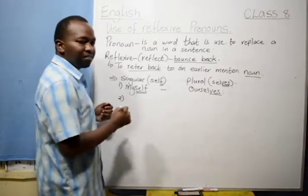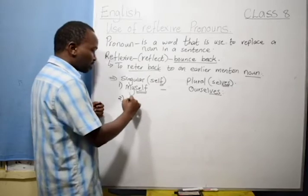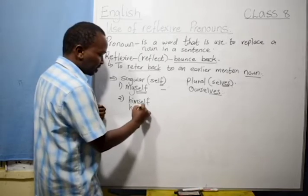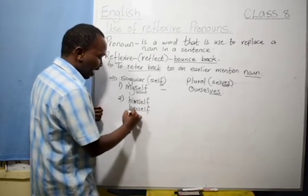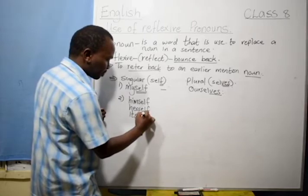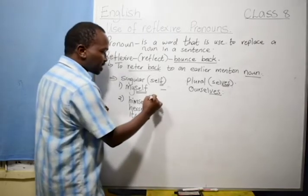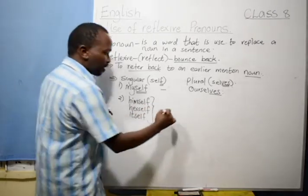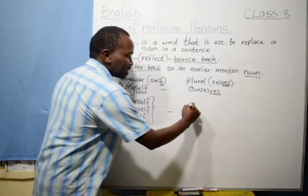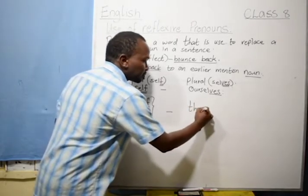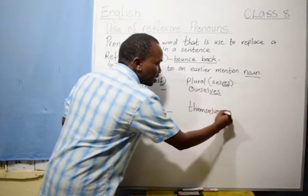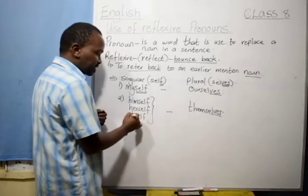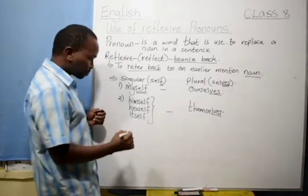Number two, we have the reflexive pronouns himself, herself, and itself. Now, these three reflexive pronouns, when it comes to writing them in plural, they usually have one plural. That is, themselves. So, himself, themselves. Herself, themselves. Itself, themselves.